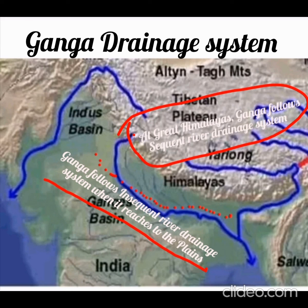Hi everyone, welcome to Exam Dynamics. Let's talk about the Ganga river. There is a big confusion among students about the Ganga river system — whether Ganga is a sequent river, insequent river, or antecedent river.